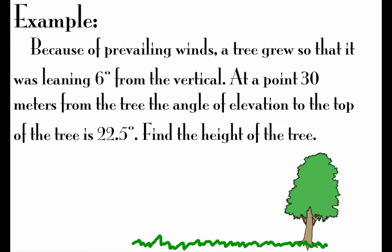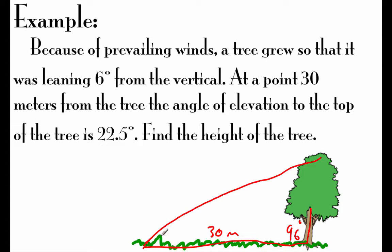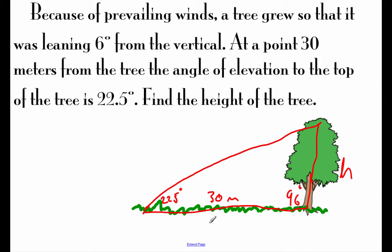The next example is an application problem. We've got a tree growing in a windy area. Because of prevailing winds, the tree grew leaning six degrees past vertical. Since vertical is 90 degrees, that makes the angle at the base 96 degrees. We're standing at a point 30 meters from the tree, looking up to the top with an angle of elevation of 22.5 degrees. The angles inside the triangle must add up to 180, making the top angle 61.5 degrees.